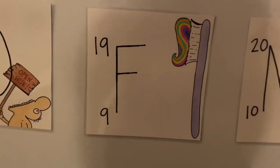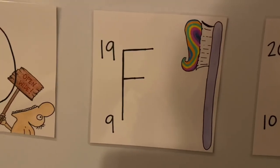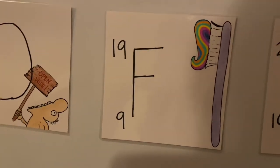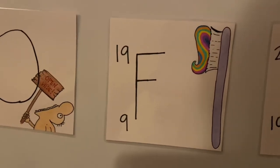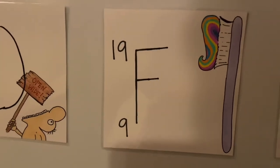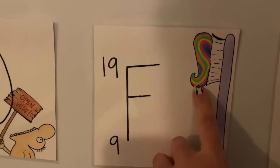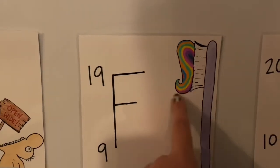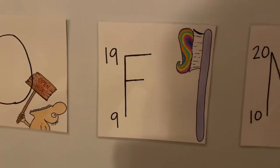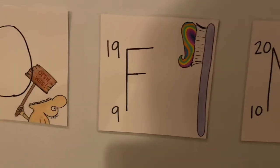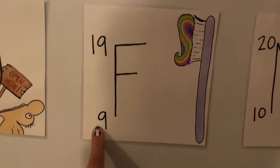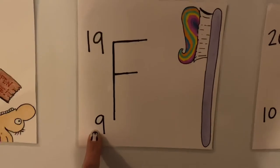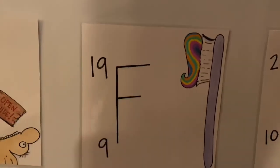Next, we have F. F stands for fluorine. Fluorine sounds a lot like fluoride, which is found in our toothpaste. And this is some scrumptious looking toothpaste, if I do say so myself. Fluorine fluoride. Atomic number is 9. This is an odd number. Times 2 is 18 plus 1 is 19.